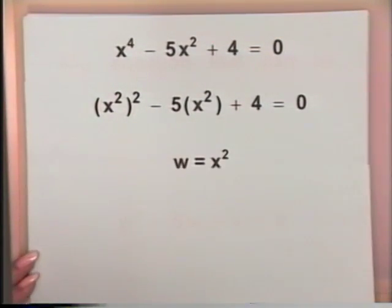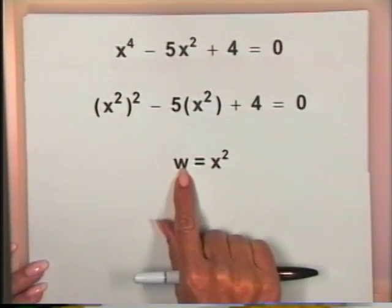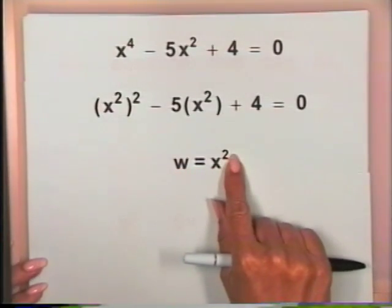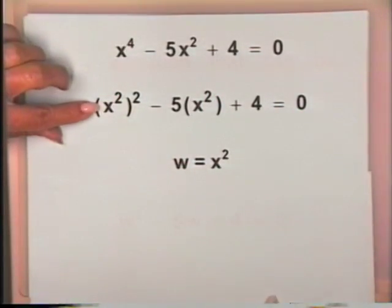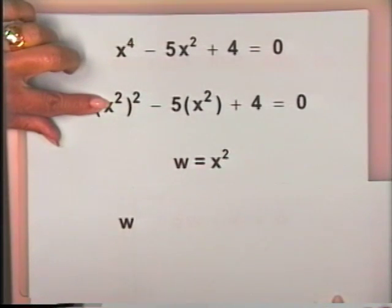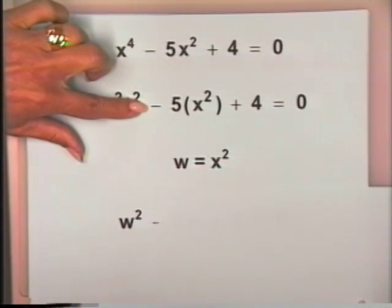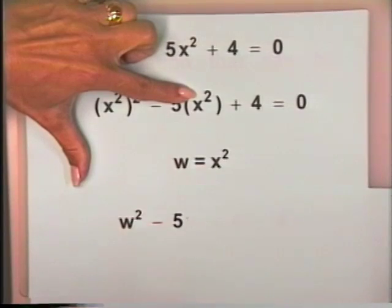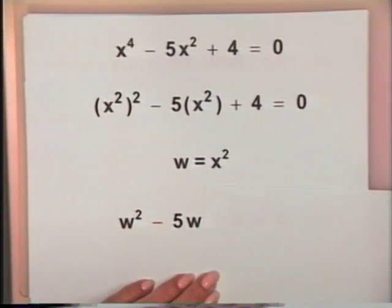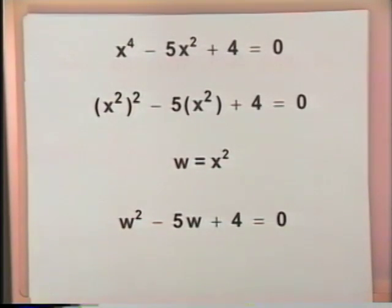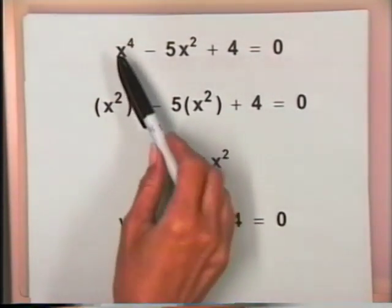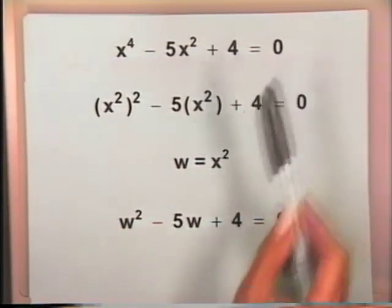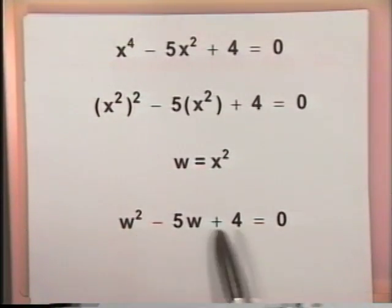Now suppose that we replaced x squared with w. Suppose we let w equal x squared and substituted w for x squared. What would this equation look like? In place of x squared, we would have w, and of course it would be squared. Minus 5, and then we would replace x squared with w, giving us minus 5w, plus 4 equals 0. This new equation is a quadratic equation in the variable w. We took the original equation that was not quadratic and by substitution converted it to quadratic form.